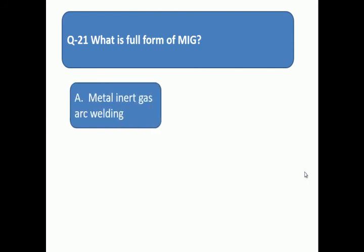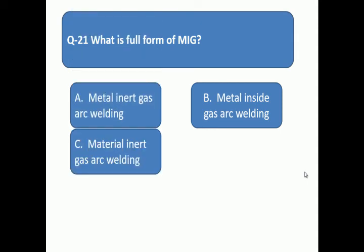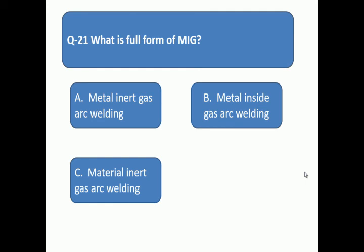Question number 21: What is the full form of MIG? What is the full form of MIG? A: metal inert gas arc welding, B: metal inside gas arc welding, C: material inert gas arc welding, D: none of above.